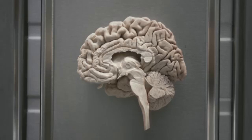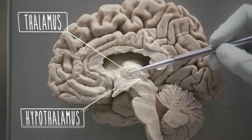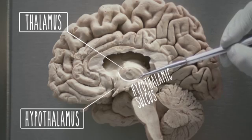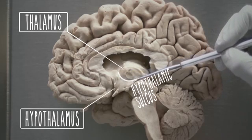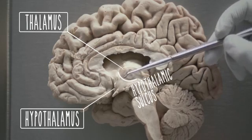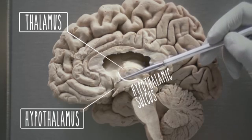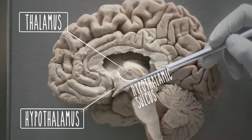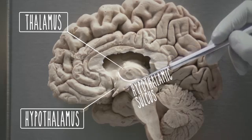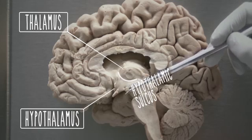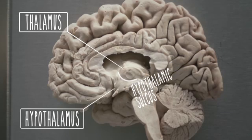Let's begin with an anatomical overview of the hypothalamus. In this mid-sagittal section, you can delineate the hypothalamus from the thalamus via the hypothalamic sulcus. Anteriorly, the hypothalamus extends to the anterior commissure and the optic chiasm. Inferiorly, it includes the mammillary bodies and extends to the infundibular stalk where it communicates with the pituitary gland.